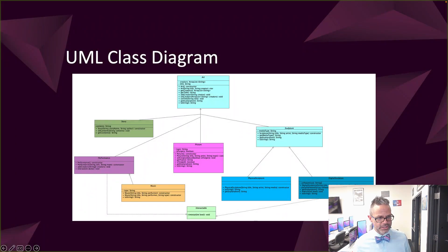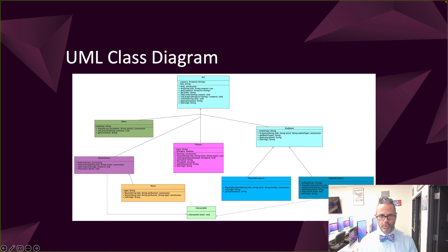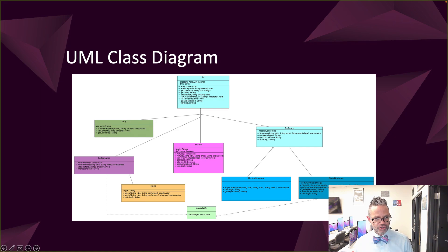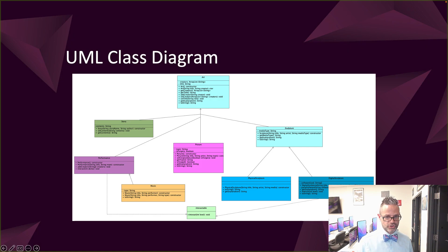Here we can see a quick class diagram to show the relationship we're working with and how inheritance is designed. We have an abstract class Art that has subclasses of Story, Performance, Picture, and Sculpture. Then further subclasses of Performance with Music, and of Sculpture with Physical Sculpture and Digital Sculpture.